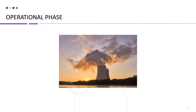Once construction is complete, the nuclear power plant enters the operational phase, where it generates electricity by harnessing the energy from nuclear fission reactions. During this phase, the plant is subject to rigorous safety protocols, regulations, and inspections to ensure safe and efficient operation. The operational phase involves loading nuclear fuel into the reactor, controlled fission reactions that generate heat, and the production of electricity through a steam turbine. The plant also requires ongoing maintenance, inspections, and upgrades.